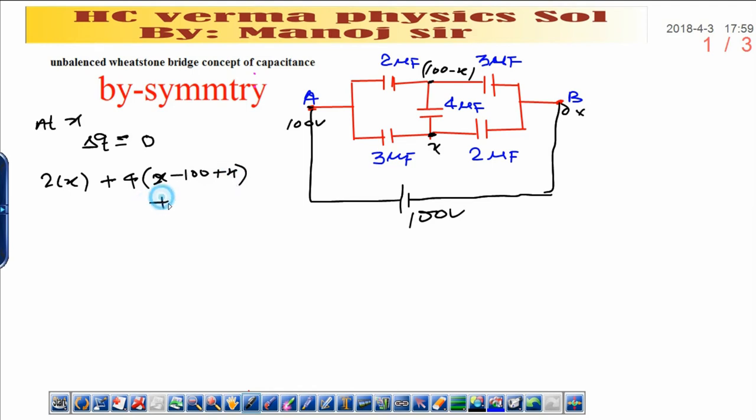Plus 3 is the capacitance of capacitor and potential across it is x minus 100. By this way I can write...